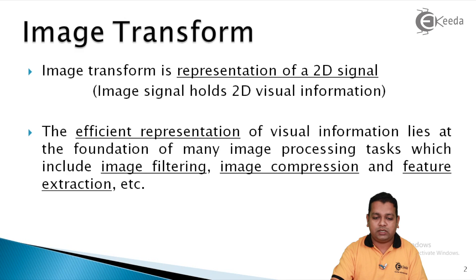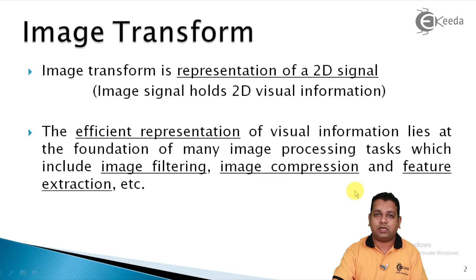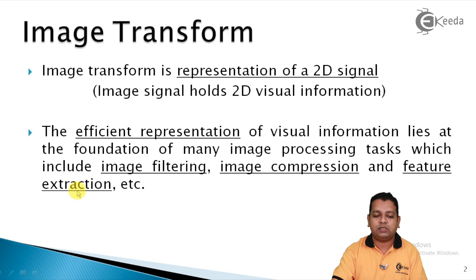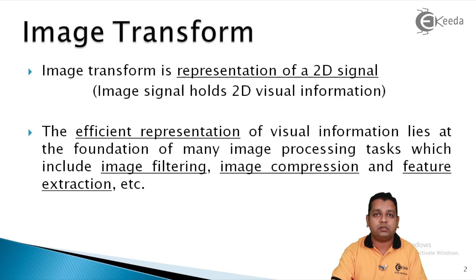The efficient representation of visual information lies at the foundation of many image processing tasks, which include image filtering — low pass and high pass filtering — image compression, where we require to store images with less memory, and feature extraction. A feature with respect to an image is any useful information extracted from the image. Feature extraction is also one of the tasks in image analysis. Many tasks with respect to images require efficient representation — redundancy should not be there, and it should be able to reproduce further as well as give more information.